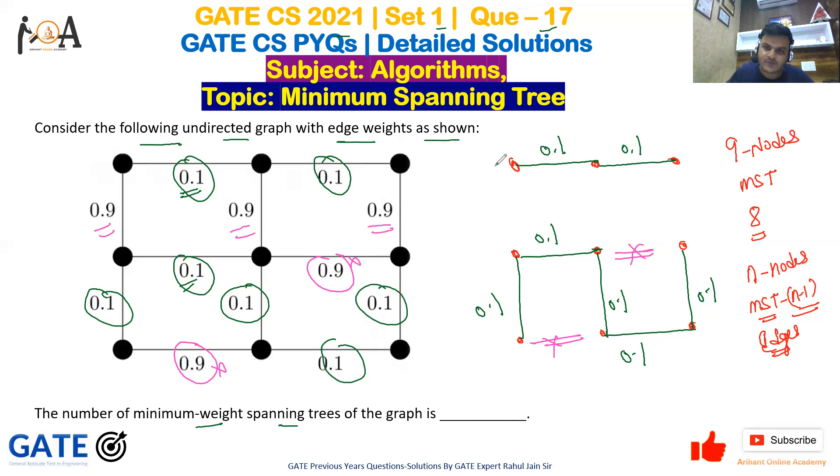One MST would be like this, another MST would be like not that edge but this edge, and the third one would be like this. We have three edges here—this one, this one, and this one—and we need to select one out of three. That's three ways. So the number of minimum weighted spanning trees in the graph would be three.